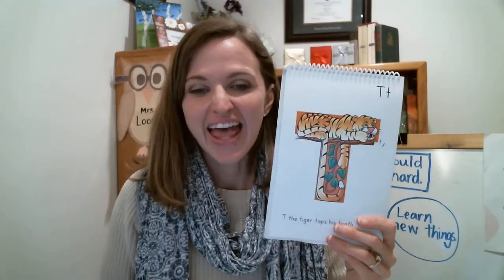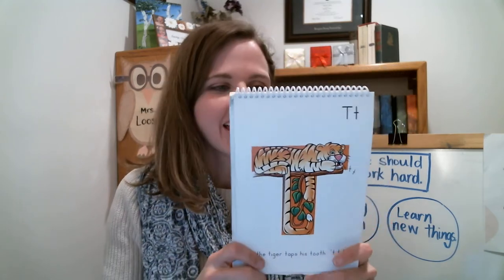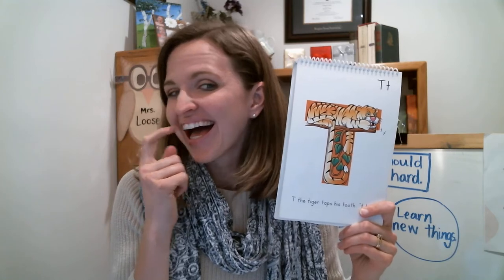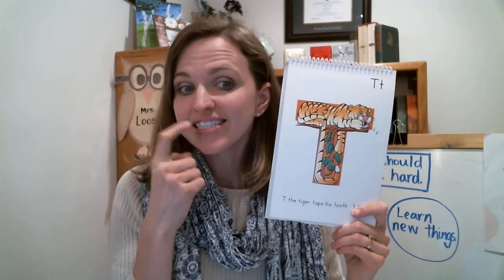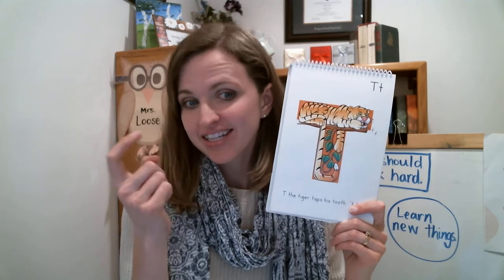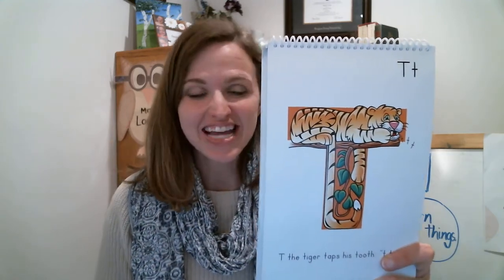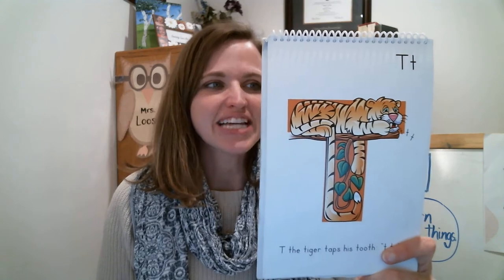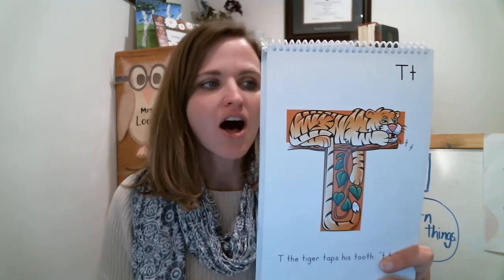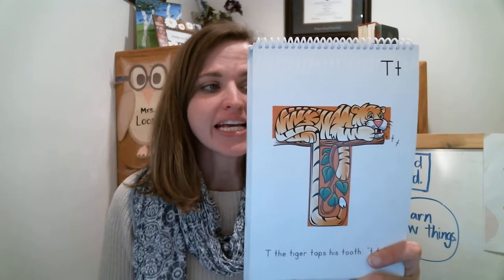Here's another one. This is T the tiger. He's going to tap his tooth like this. Can you tap your tooth? T the tiger taps. T the tiger taps and taps his troublesome tooth. T t t all the day long on a terrible Tuesday. He taps.